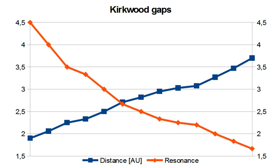The weaker resonances lead only to a depletion of asteroids, while spikes in the histogram are often due to the presence of a prominent asteroid family.